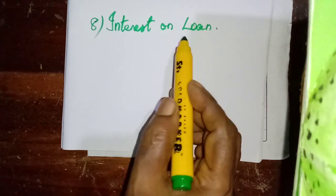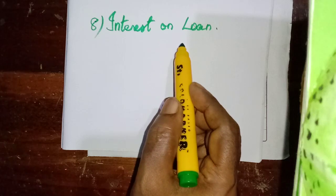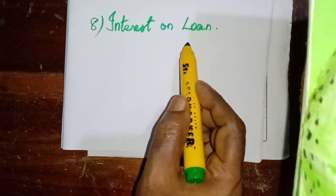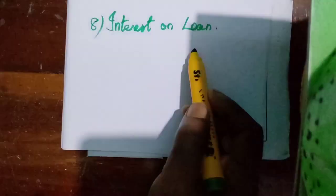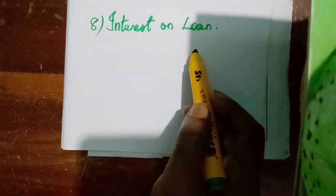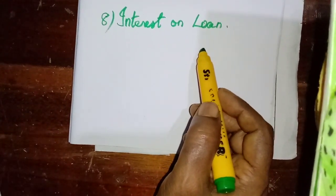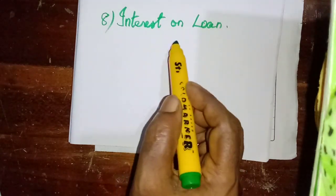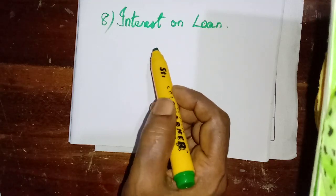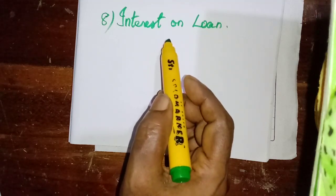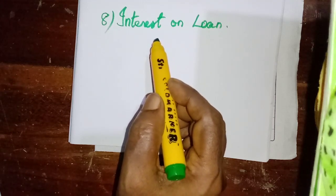Now, what is interest on loan? The business organization might have got some loan either from the banks or from the financial institutions. For that loan, they have to pay interest annually. That percentage of interest will be given in the problem. We should calculate. Sometimes the interest paid will be given in the trial balance.